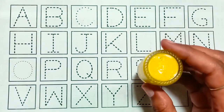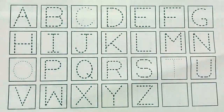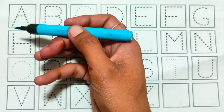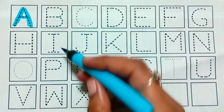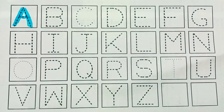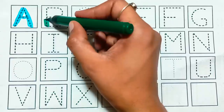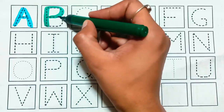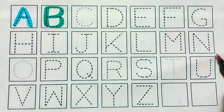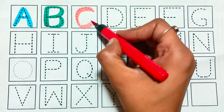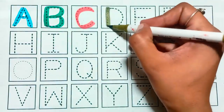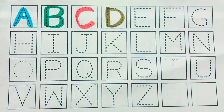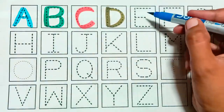Yellow color. A for Apple, B for Bowl, C for Cat, D for Dog, E for Elephant.